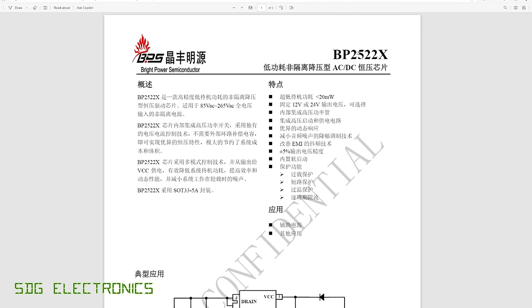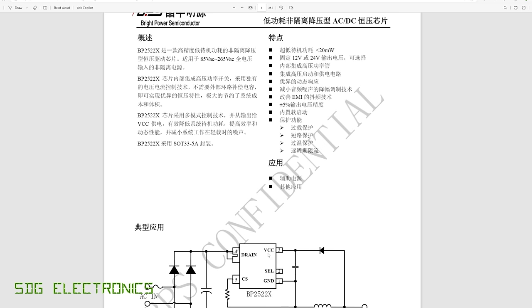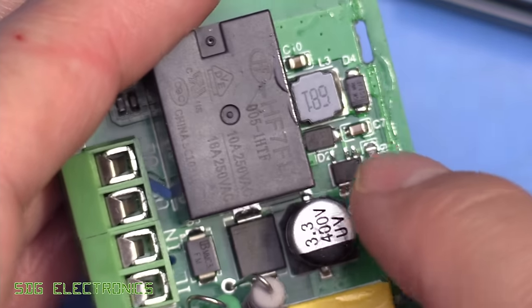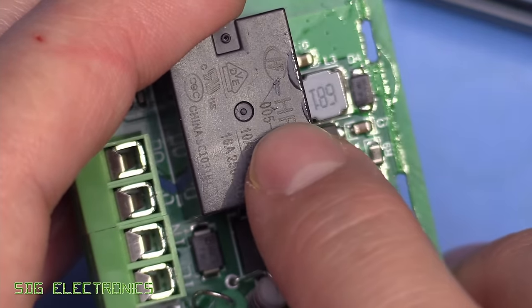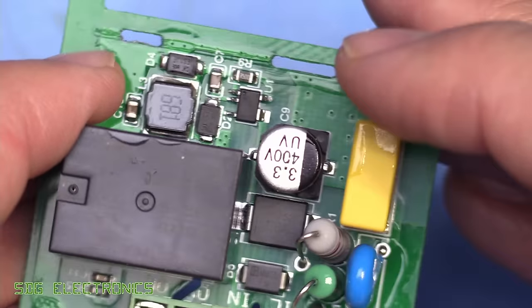It's a Bright Power BP2522. As you can see, there's no feedback resistors because this is a fixed output device - either 12 volts or 24 volts. All of the electronics seems to run on a 5 volt supply, the relay is a 5 volt device as well.